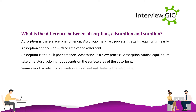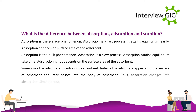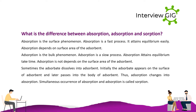What is the difference between absorption, adsorption and sorption? Adsorption is a surface phenomenon and a fast process — it attains equilibrium easily and depends on the surface area of the adsorbent. Absorption is a bulk phenomenon and a slow process — it takes time to attain equilibrium and does not depend on the surface area of the adsorbent. Sometimes the adsorbate dissolves into the adsorbent, initially appearing on the surface and later passing into the body of the adsorbent, so adsorption changes into absorption. The simultaneous occurrence of absorption and adsorption is called sorption.